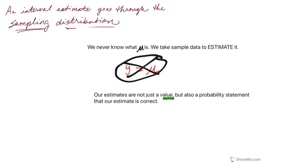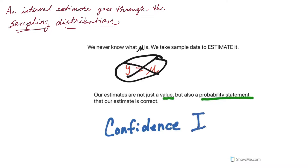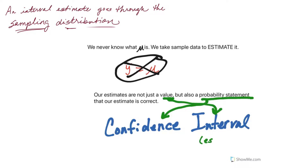So when we do estimation, we don't just come up with a value, but we come up with a probability statement that our estimate is correct. By going through the sampling distribution, we're going to be able to create what we call a confidence interval. With a confidence interval, confidence reflects probability, and our estimate is actually going to be a range of values in which we believe the true parameter falls. So estimation isn't simply just saying the sample mean equals the population mean — it means here's our estimate, and here's a probability statement that our estimate is actually correct.